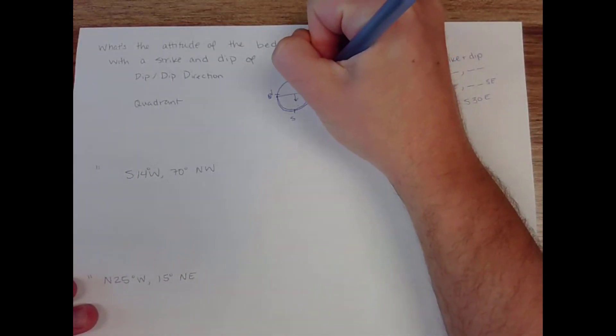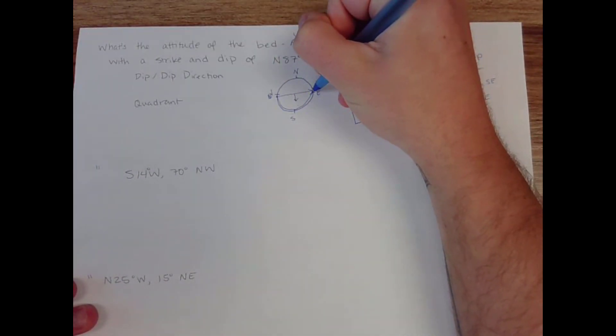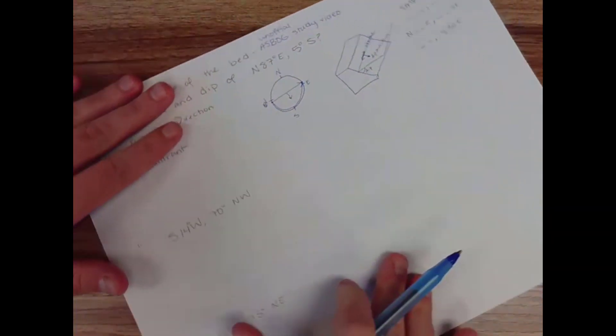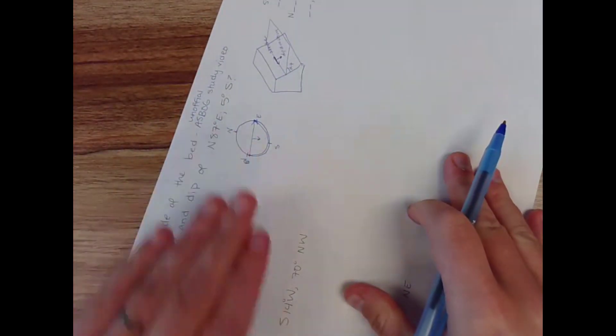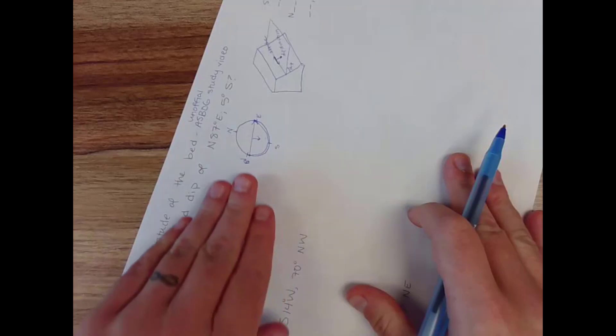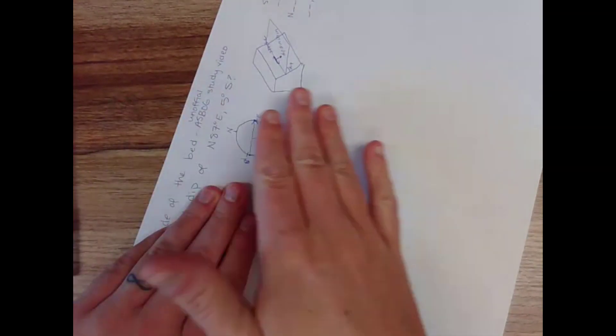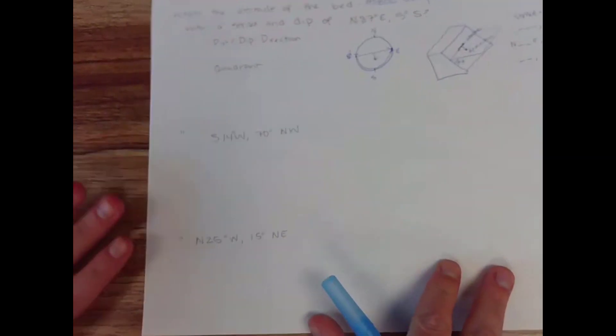Okay, so the first thing that I want to notice is this does follow right-hand rule. If I imagine looking toward north 87 east, so I'm going to line this up with my point of view. If I am looking to north 87 east, sure enough, that bed is falling off to the right to the south. So I am written in right-hand rule.